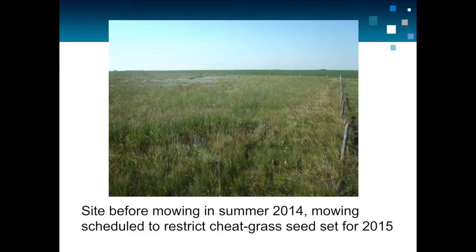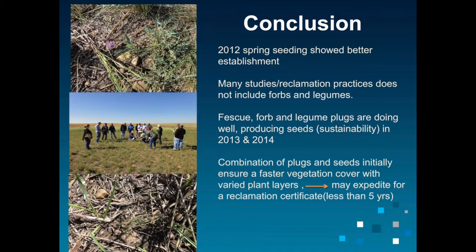We went back to the site, mowed it again, tried to get rid of the weeds and cheatgrass. After two years of establishment, whether it's the plots left blank with no seeding or the seeded-plug plots, all of them look fantastic compared to where we started. In conclusion, we see definitely better establishment from spring seeding, but this will vary site to site. Using forbs and legumes to enhance diversity is a great idea — it gives site structure, more diversity, and helps reach reclamation targets faster.